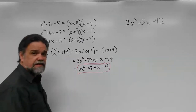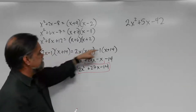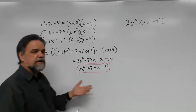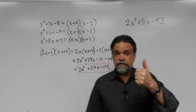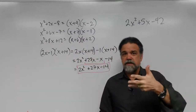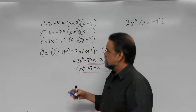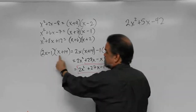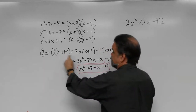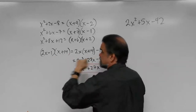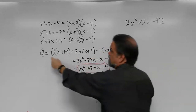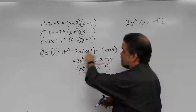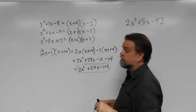Many of you might skip that first step and just use the FOIL method — First, Outside, Inside, Last. You'd say: 2x times x is 2x², 2x times 14 is 28x, negative 1 times x is negative x, and negative 1 times 14 is negative 14. I put this here for a reason, and you'll see what it is in just a second.